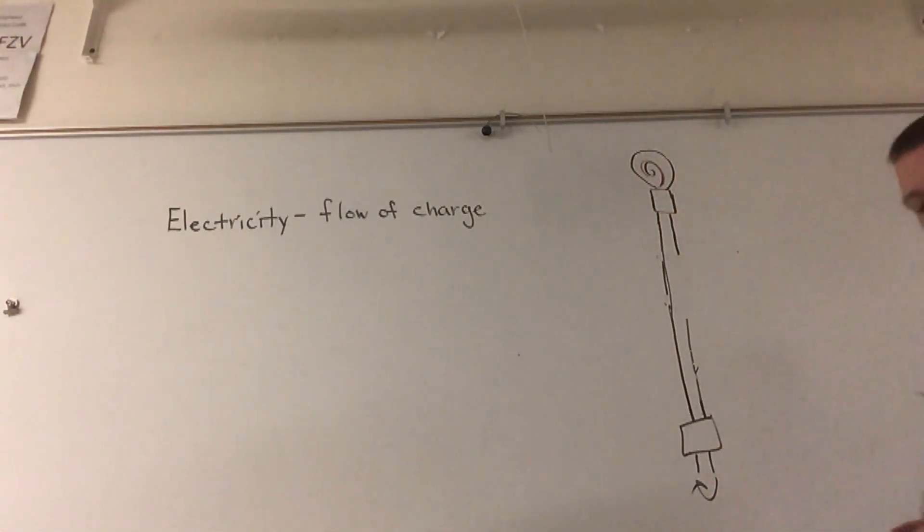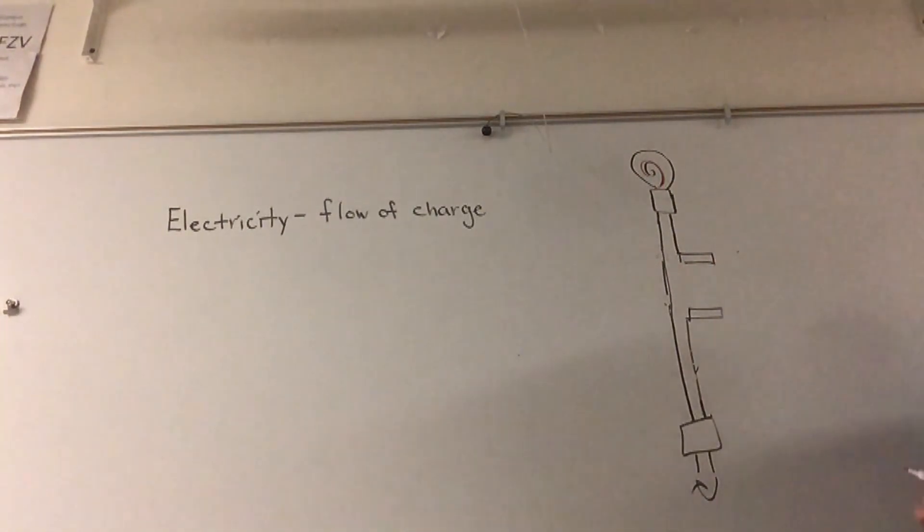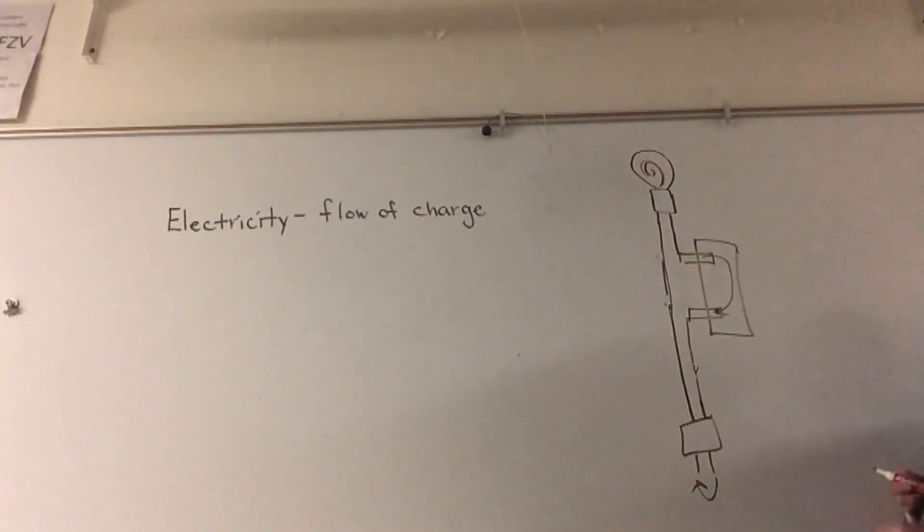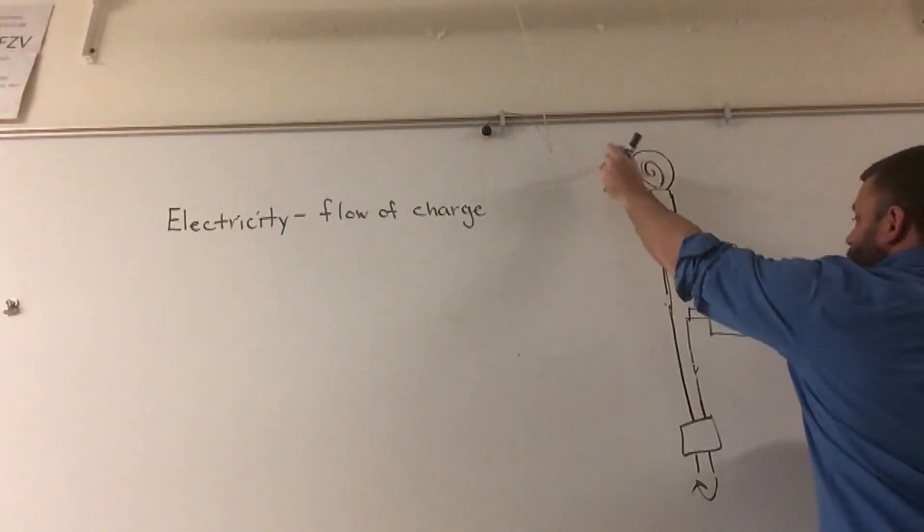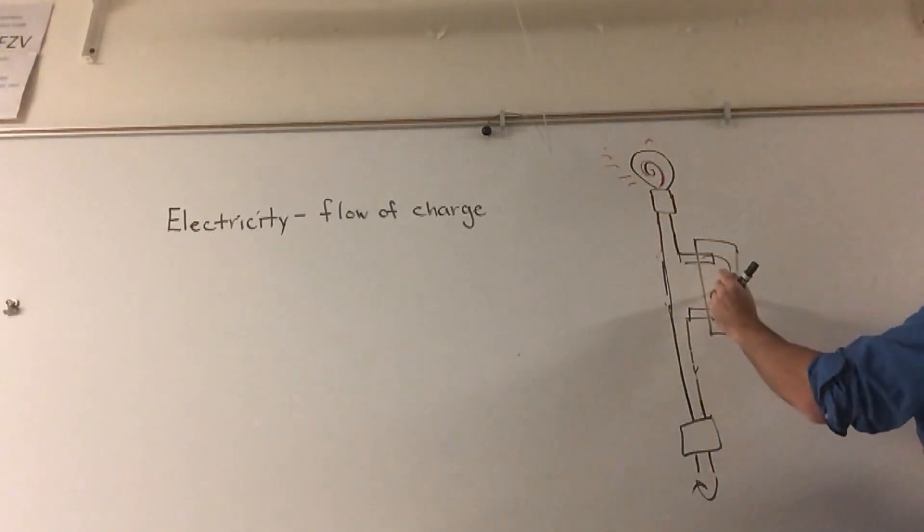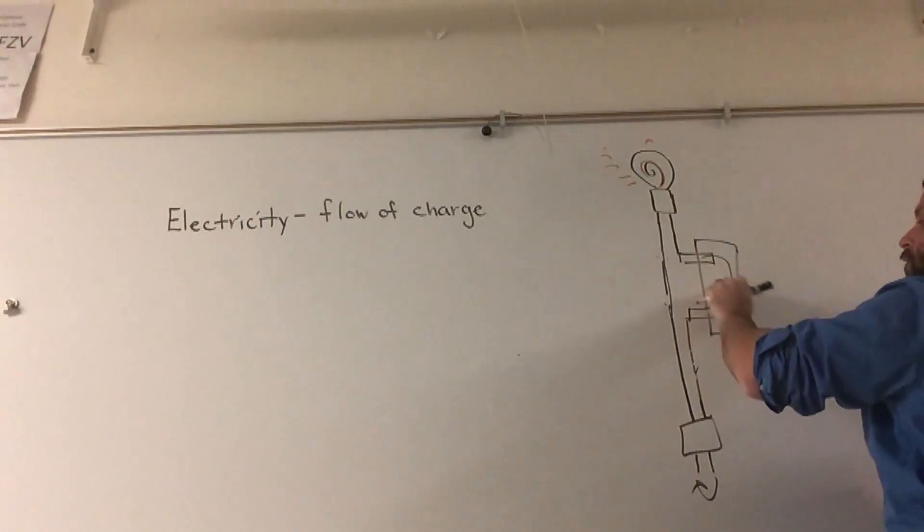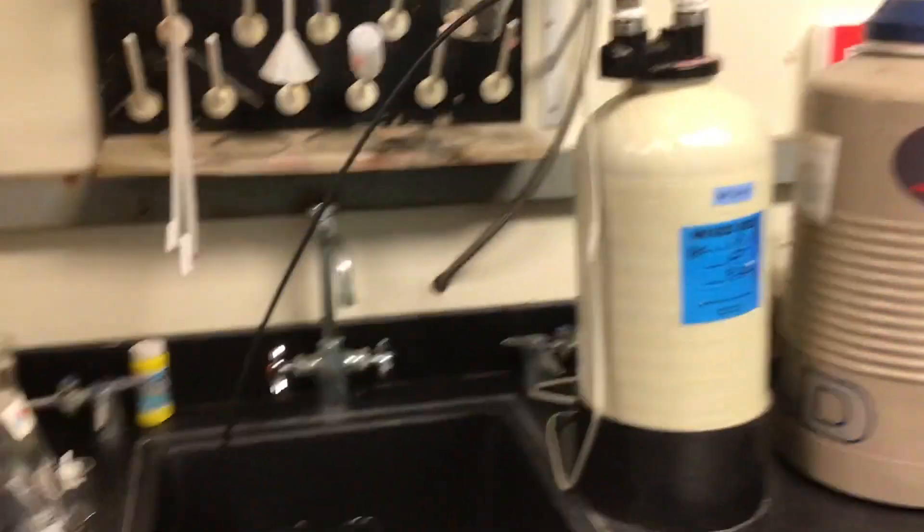We have an apparatus in which we've interrupted this circuit, and we have two prongs with metal wires inside of them. We're going to add different substances across these two prongs to see if the charges can continue to flow through them. If the charges continue to flow, then the light bulb will light up and the substance conducts electricity. If the substance does not conduct electricity, the light bulb will stay off.